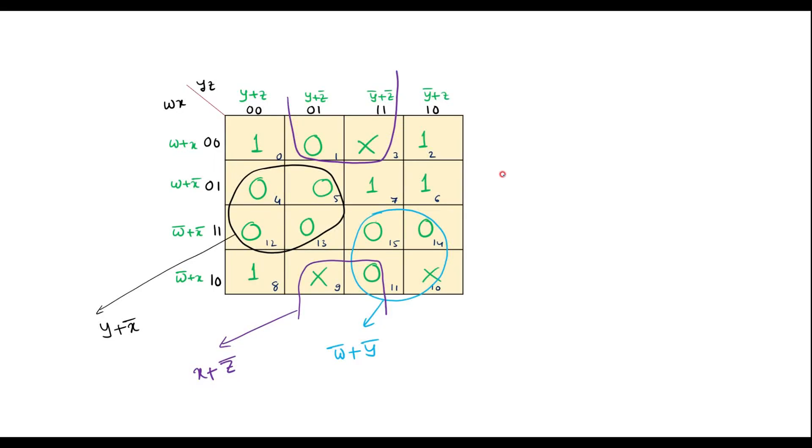The result is, we have f is equal to x bar plus y, then we have x plus z bar, and we have w bar plus y bar. So this is the simplified expression. Thank you for watching.